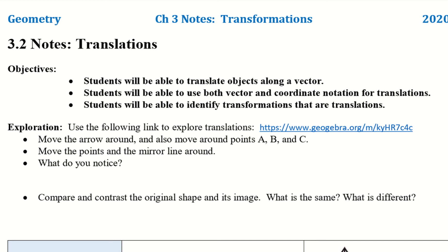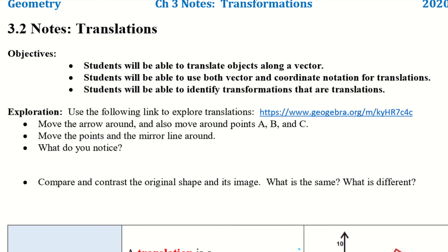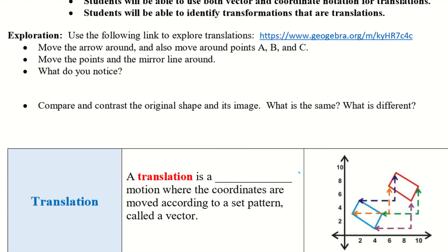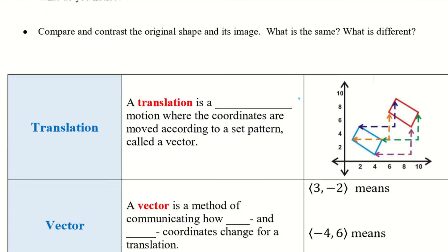So take a second, take a look at the exploration, go to that website. You want to move the arrow around and also move around the points A, B, C. Move the points and the mirror line around. So what do you notice? And then compare and contrast the original shape and its image. What's the same? What is different? Alright, hopefully you had a chance to take a look at the link and the exploration.